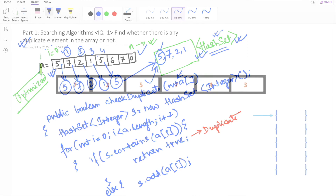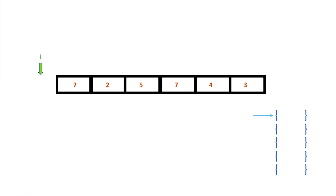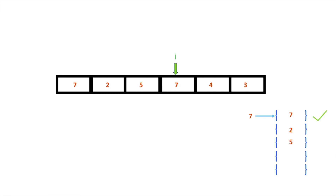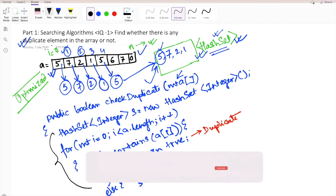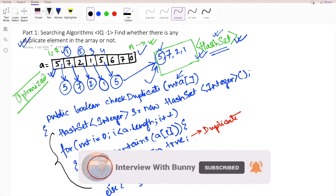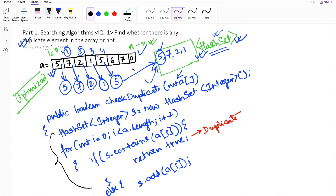So here we iterate a for loop from i equal to zero to the end of the list, checking whether the value at the current index is already present in the hash set. If it doesn't exist we keep adding the value and moving forward. As soon as we find a match — meaning the current element is already in the hash set — we return true, indicating a duplicate element. The solution is quite simple; if you find any problem understanding it, let me know in the comments. There are plenty more approaches to solve this problem, so if you find a more effective solution, please share below. Let's move to the next question for our searching algorithms — see you in the next video. Thank you.